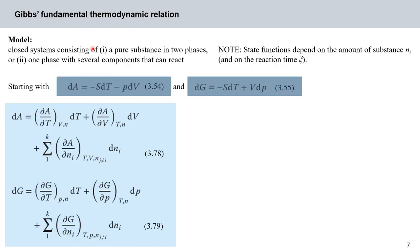Our previous considerations referred to pure homogeneous substances in a closed system. Now we go a step further and consider closed systems consisting either of a pure substance in two phases, or a system with one phase composed of several components, allowing chemical reactions between them. The functions needed to describe this system will depend on the amount of substance n_i, and sometimes also on the reaction coordinate chi. We will circle back to that in lecture eight. This dependence on n and chi applies equally to all functions: U, H, A, G, J, and Y.